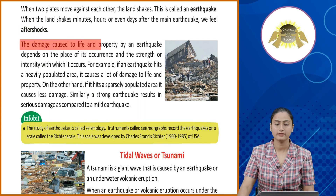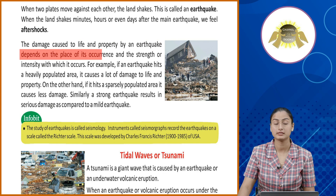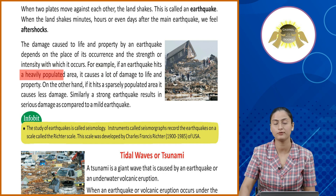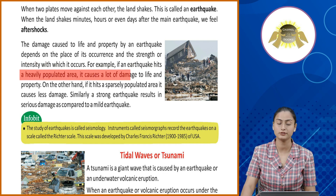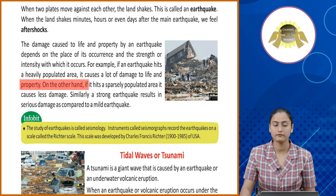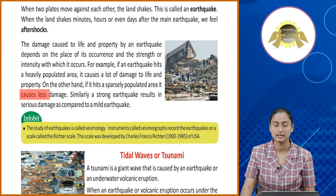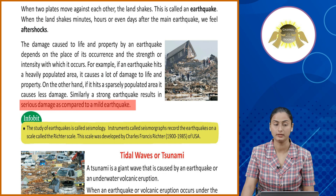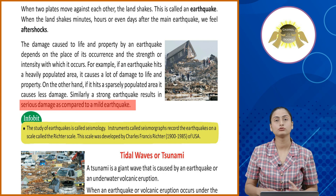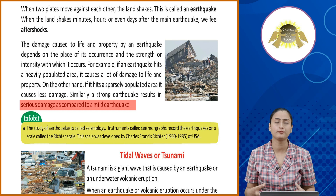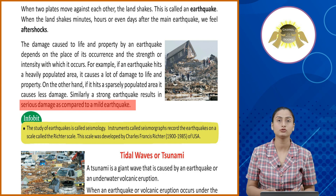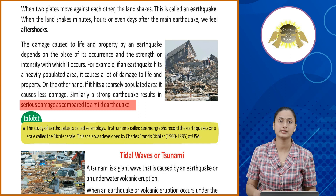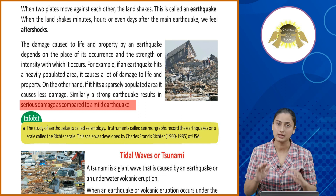The damage caused to life and property by an earthquake depends on the place of its occurrence and the strength or intensity with which it occurs. If an earthquake hits a heavily populated area, it causes a lot of damage to life and property. On the other hand, if it hits a sparsely populated area, it causes less damage. Similarly, a strong earthquake results in serious damage as compared to a mild earthquake. Earthquake ki intensity differ karti hai — jab ye bohot zyada populated area mein zyada intensity ke saath aata hai, toh waha pe zyada damage hota hai. Agar ye less populated area mein kaam intensity ke saath aata hai, toh waha pe kaam damage hota hai.